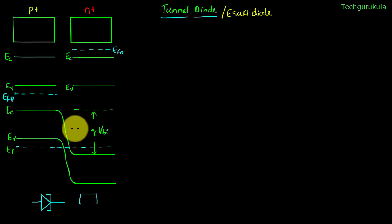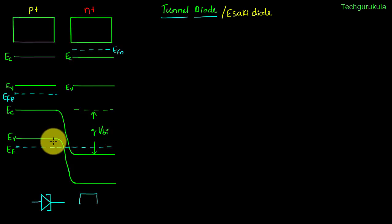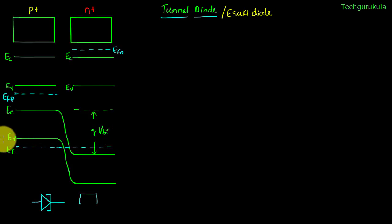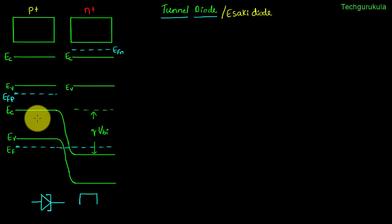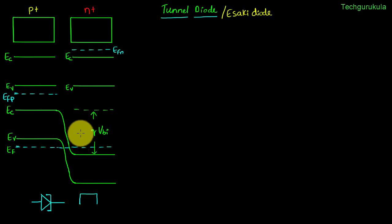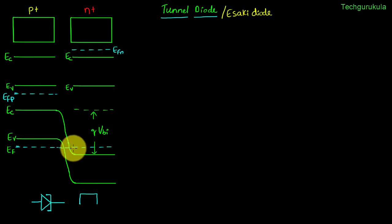Now let us understand how a tunnel diode works when we apply a potential difference across this diode. To start with, let's say we apply a potential difference of zero. Then the energy band diagram would look exactly like the equilibrium energy band diagram, so the current flowing through the diode would be zero.